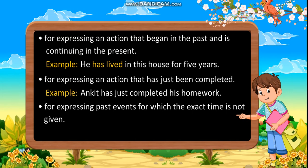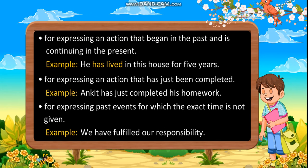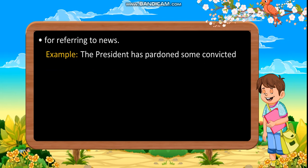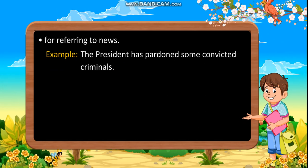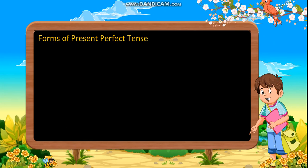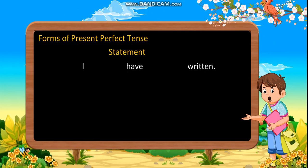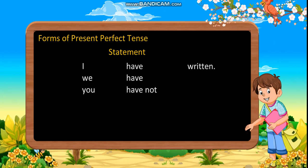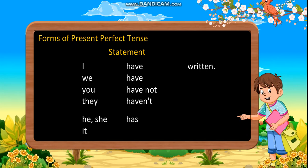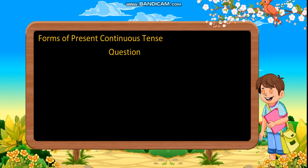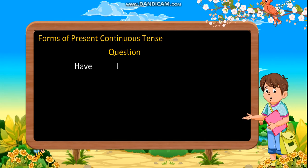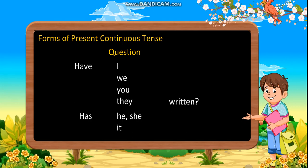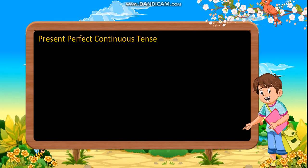For expressing past events for which the exact time is not given. Example: We have fulfilled our responsibility. For referring to news. Example: The president has pardoned some convicted criminals. Forms of present perfect tense — Statement: I/We/You/They have written. He/She/It has written. Negative: have not / haven't, has not. Question: Have I/We/You/They written? Has he/she/it written?